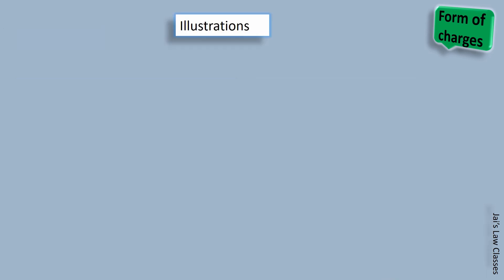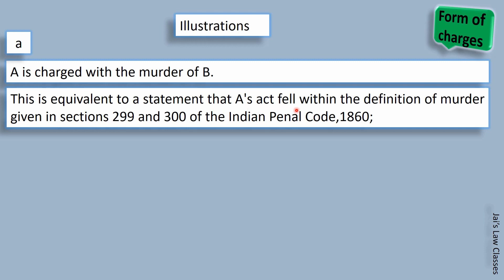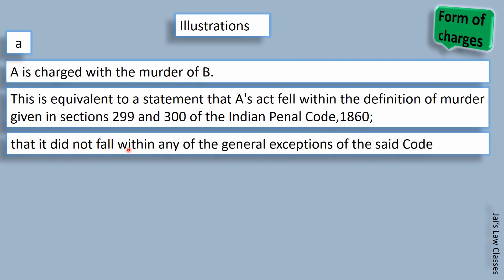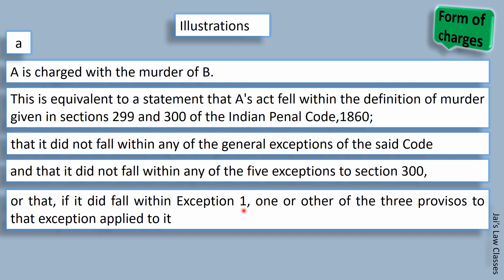Now let's cover the illustrations. These are an important part of Section 211 because in judicial examinations such illustrations are covered as question and answer. The first illustration: A is charged with the murder of B. For a law student, this is equivalent to a statement that A's act fell within the definition of murder given under Sections 299 and 300 of IPC; that it did not fall within any of the general exceptions of the code; and that it did not fall within any of the five exceptions of Section 300, or that it did not fall within exception 1, or one or other of the three provisos to that exception applied to it. Only after presuming all such things can we charge A with murder.